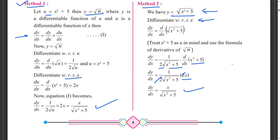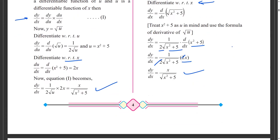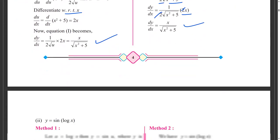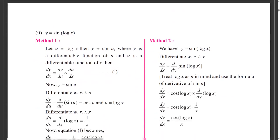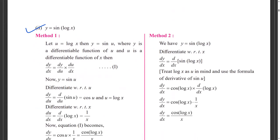The second method is easier because it has fewer steps. Whatever method you feel comfortable with, you can use. From the second problem onwards we'll use Method 2. The second problem involves a combination of trigonometric and logarithmic functions.